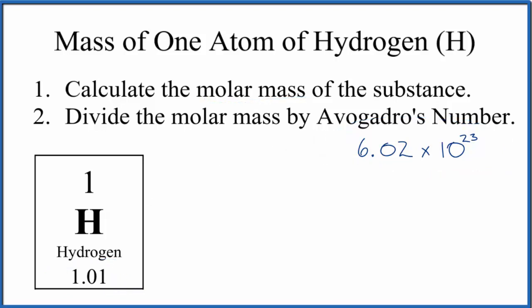You can think of this average atomic mass here as having the units of grams per mole. So we could say we have 1.01 grams in one mole of hydrogen atoms.